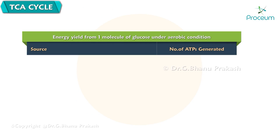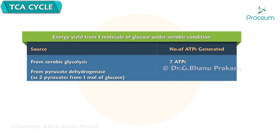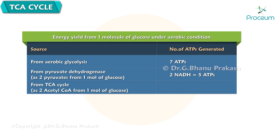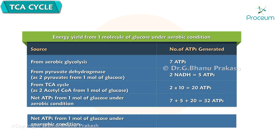Energy yield from 1 molecule of glucose under aerobic conditions. From aerobic glycolysis, 7 ATPs are generated. From pyruvate dehydrogenase, as 2 pyruvates come from 1 molecule of glucose, 2 NADH are produced, equal to 5 ATPs. From the TCA cycle, as 2 acetyl coenzyme A come from 1 molecule of glucose, 2 times 10 equals 20 ATPs. Net ATPs from 1 molecule of glucose under aerobic condition: 7 plus 5 plus 20, which is 32 ATPs. Under anaerobic condition, net ATPs are 4 minus 2, which is 2 ATPs.